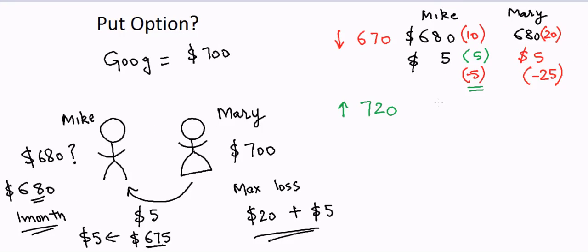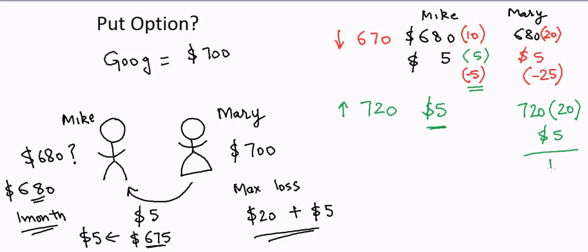In the upside scenario where the stock goes to $720, Mike will not be able to buy the stock because it never went to $680. So he keeps the five dollars he was paid — his total profit is five dollars, just for his willingness to buy the stock at $680. For Mary, her profit is $20 from the stock rising, but she paid five dollars to Mike, so her total profit is $15. She lost a little premium but was protected from the downside.